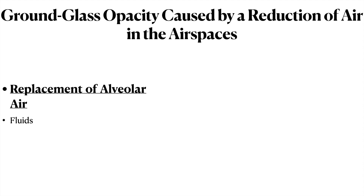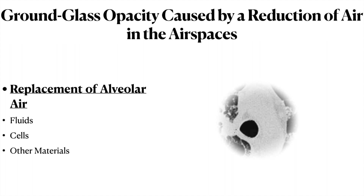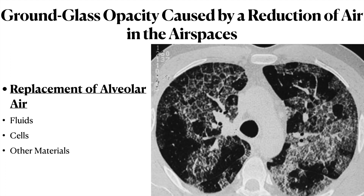Next is replacement of alveolar air, which is more common. The air can be replaced with fluids as in pulmonary edema, or cells as in infections, or other materials such as in alveolar proteinosis. Here you can see diffuse infiltrations throughout the lungs bilaterally, and since the vessels are still visible this is ground glassing. You can also find thickening of the interlobular septa.